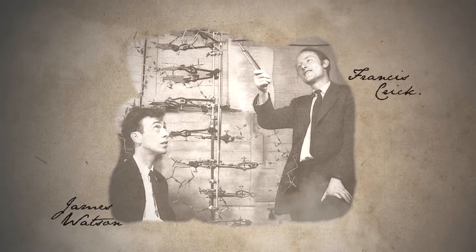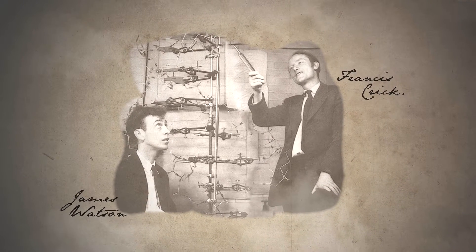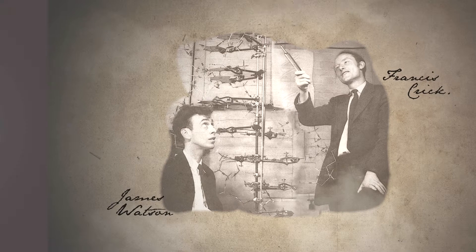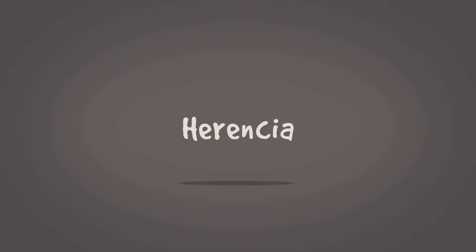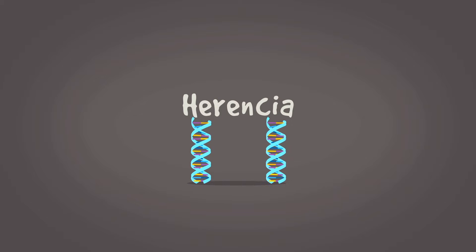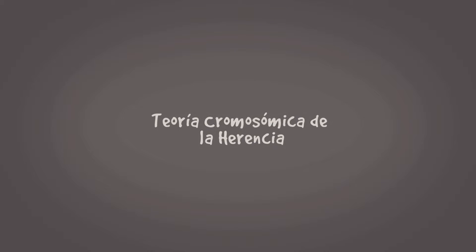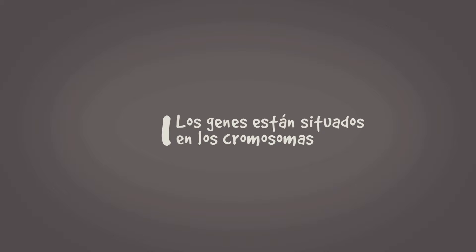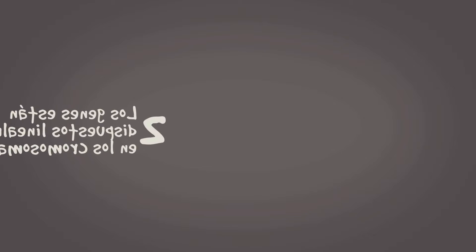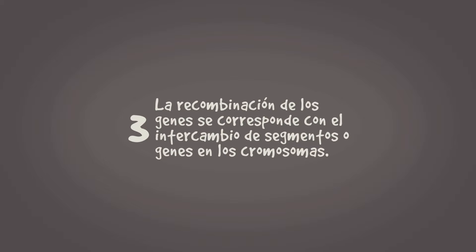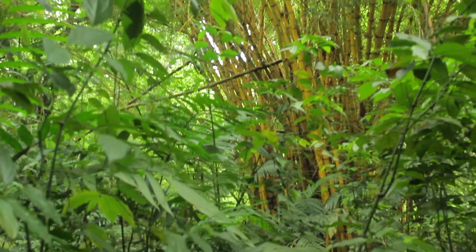Sin embargo, la humanidad ya tenía percepción de la genética hace mucho tiempo antes de estos sucesos. Actualmente, las bases de la herencia descansan en la estructura del ADN. Una de ellas es la teoría cromosómica de la herencia, que posee tres postulados básicos. Primero, los genes están situados en los cromosomas. Segundo, los genes están dispuestos linealmente en los cromosomas. Tercero, la recombinación de los genes se corresponde con el intercambio de segmentos o genes en los cromosomas.